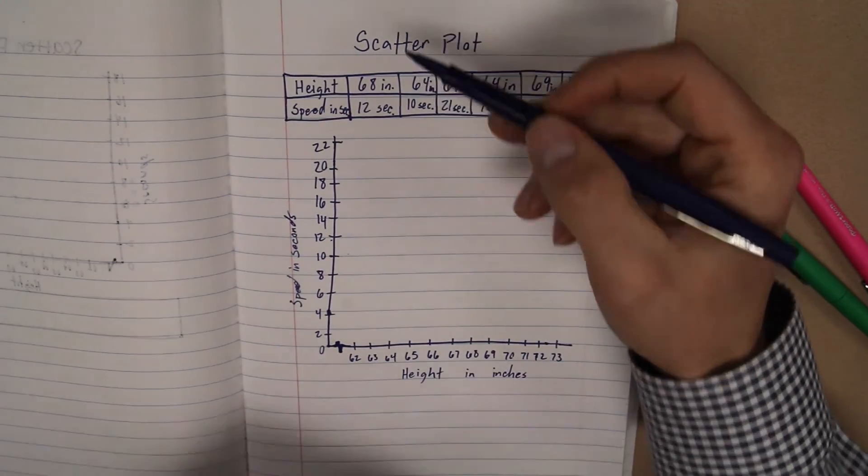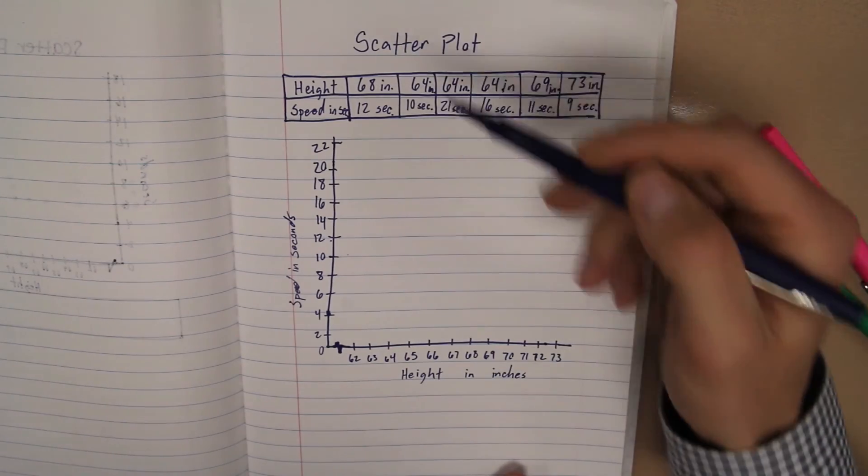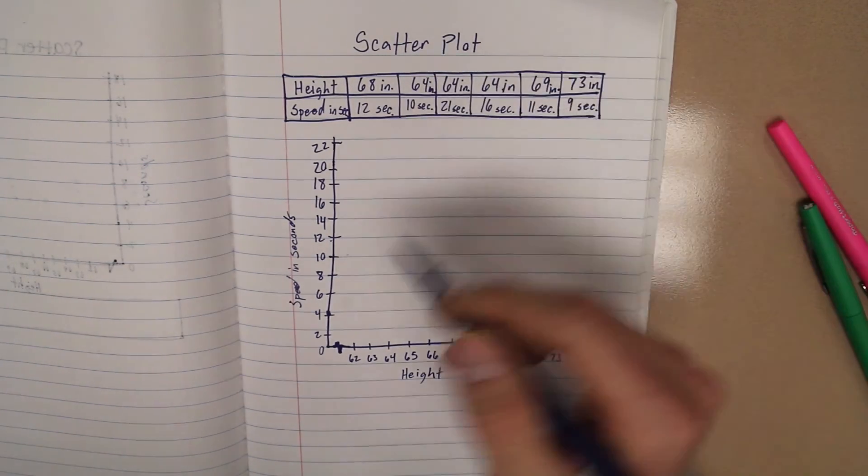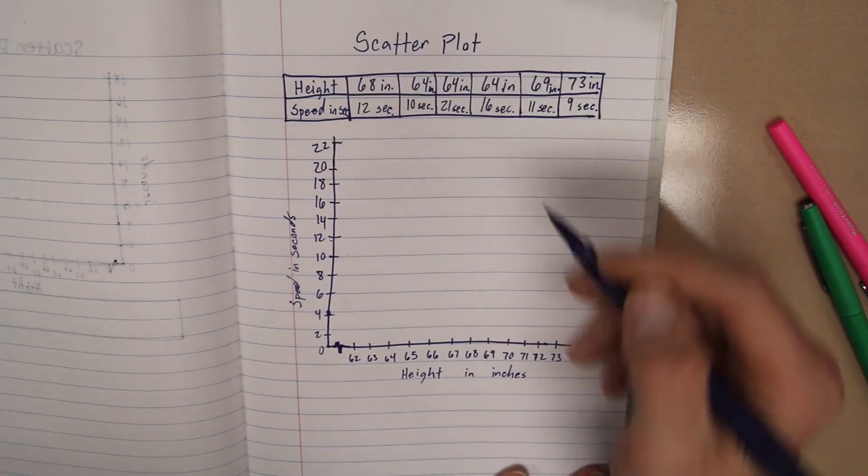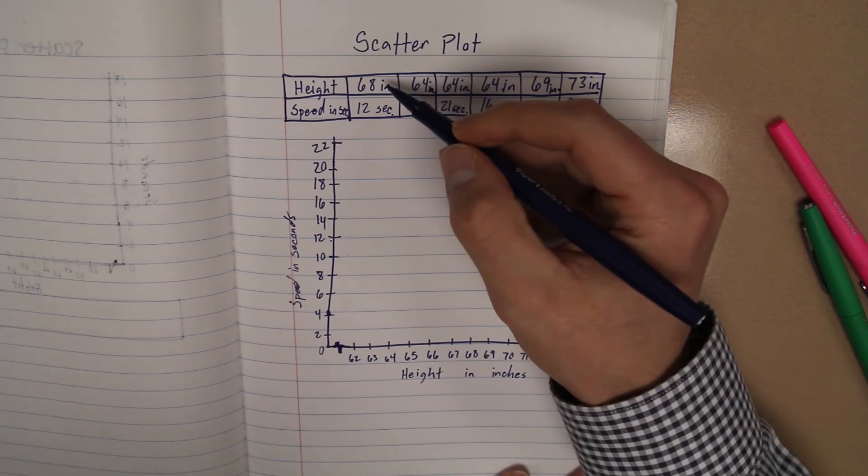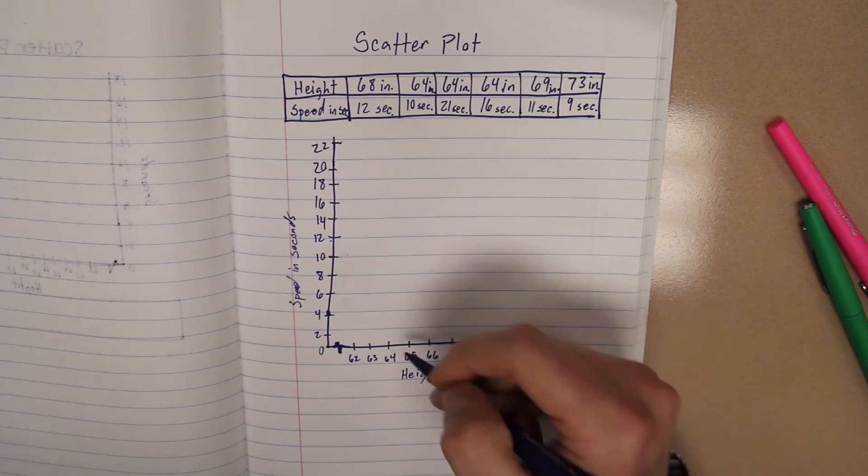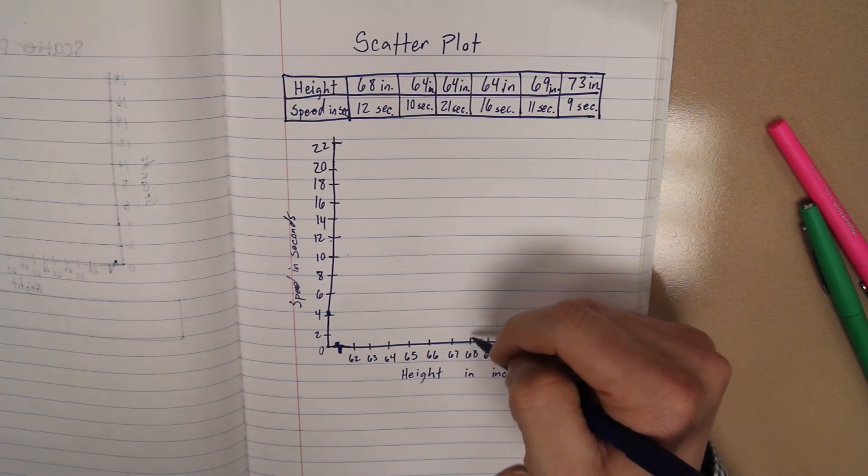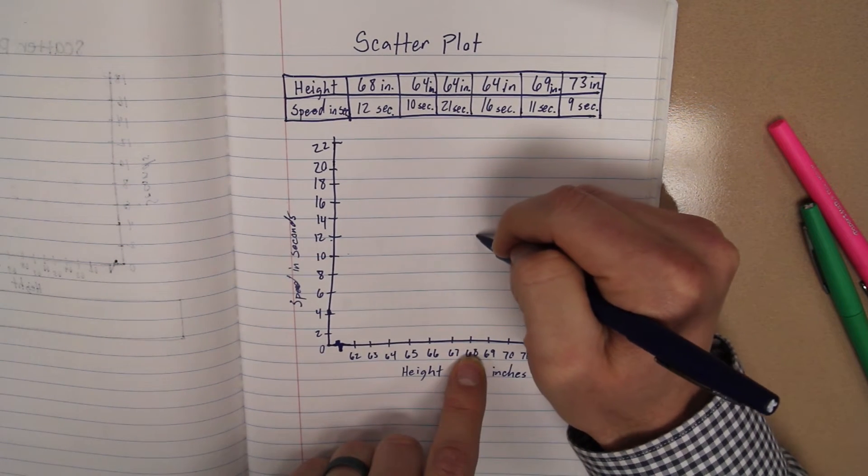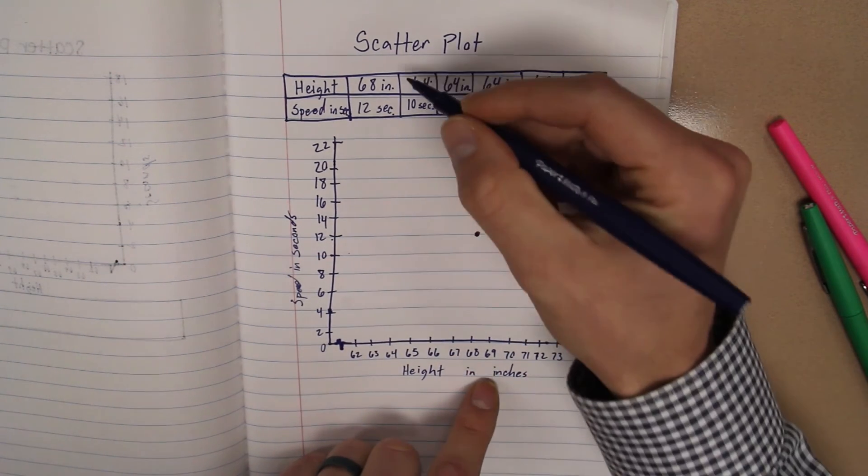So now what we're going to do is, just like our input-output table and plotting those, we're going to do the same thing here. We'll think about this is our x and this is our y. So this is our y again and our x. And so now we're looking at 68 inches and 12 seconds. So 68 inches, 12 seconds. I'm going to go up to 12. This is right above the 68. Put a dot here. That represents that time.